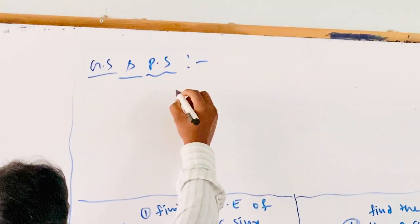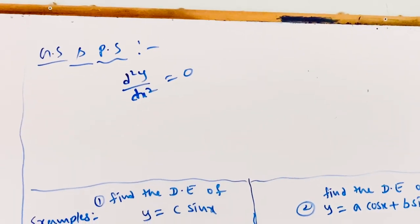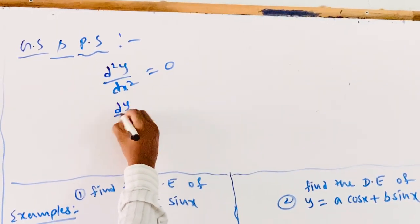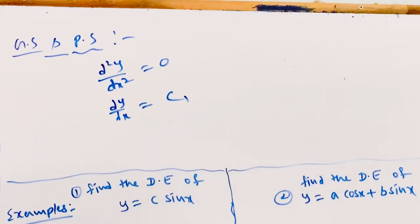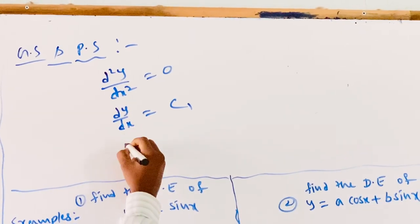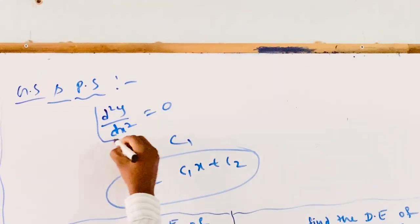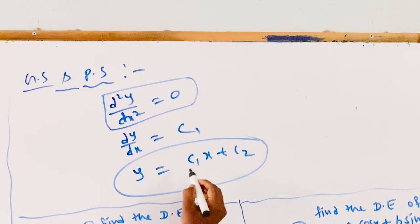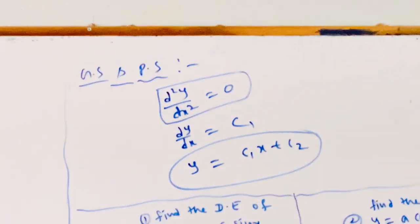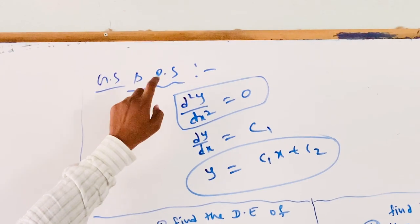One more example: d square y by dx square is equal to 0. Integrating on both sides, dy by dx is equal to c1. Again integrating on both sides, we get y is equal to c1 x plus c2. Here the given equation is a second order differential equation, so we get two arbitrary constants. This is known as the general solution of the differential equation. By finding the particular values of c1 and c2, it becomes the particular solution.